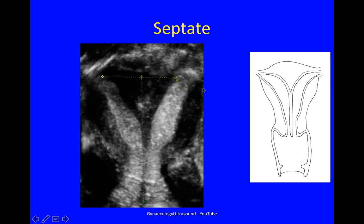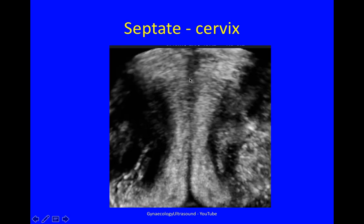Here is a septate uterus — again a convex outer myometrial contour, with a septum that in this case extends all the way down to the cervix. Two endometrial cavities, two cervical canals, two interstitial portions of the fallopian tube. You can see how that septum goes right the way down the cervix. This is a 3D volume centred on the cervix.